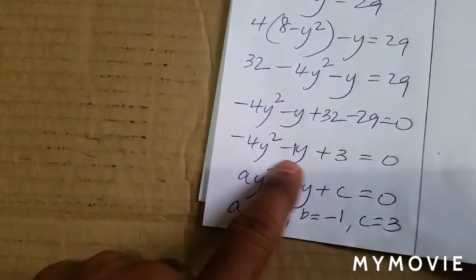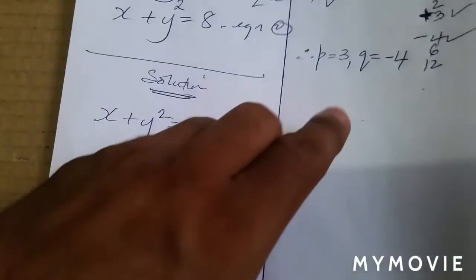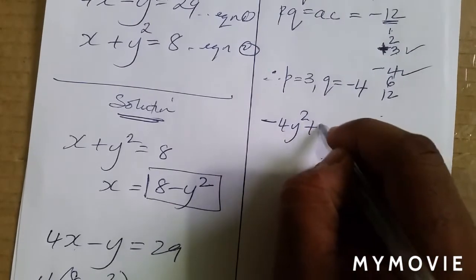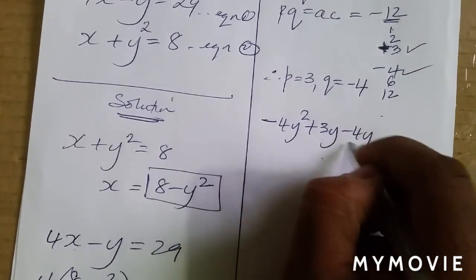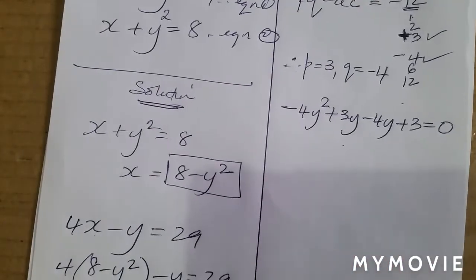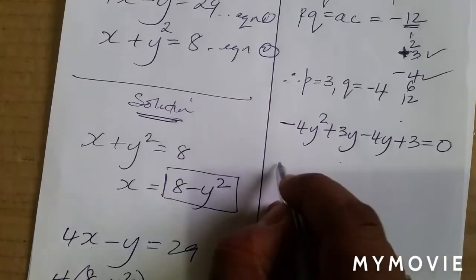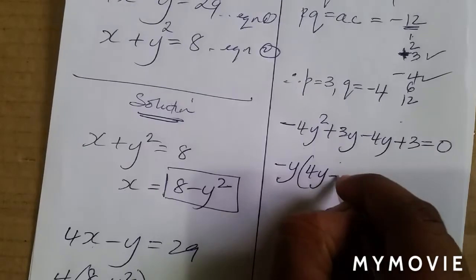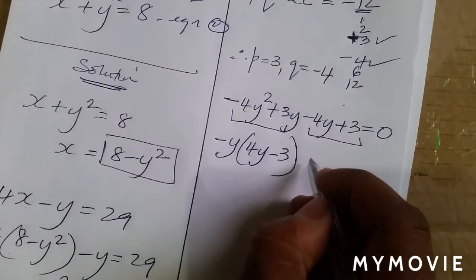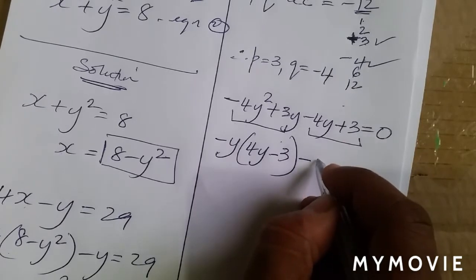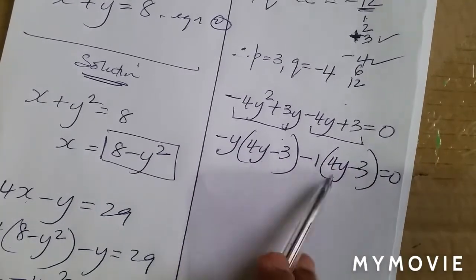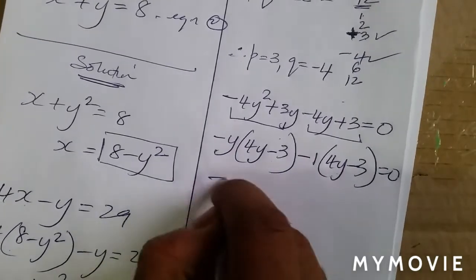What I'm going to do now is rewrite the equation, but instead of negative 1y I'm going to split it using those two numbers. So it becomes minus 4y squared plus 3y minus 4y plus 3 equals 0 — this gives back the negative 1y. Now factorizing by grouping: from the first two terms take out minus y to get minus y times open bracket 4y minus 3, and from the last two terms take out minus 1 to get minus 1 times 4y minus 3.